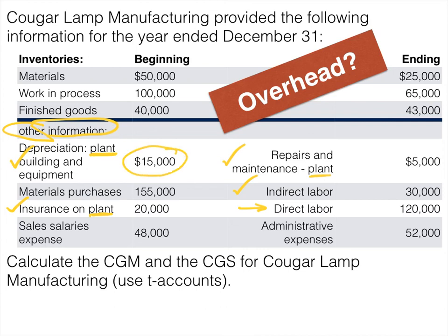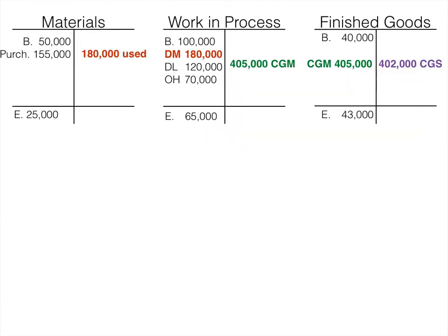So overhead totals $15,000 plus $20,000 plus $5,000 plus $30,000, which comes to $70,000. Looking at our three T-accounts: materials used is $180,000, which moves into work in process as direct materials. Overhead is $70,000. That gives cost of goods manufactured of $405,000, moving into finished goods. Solving for cost of goods sold, you should find $402,000.